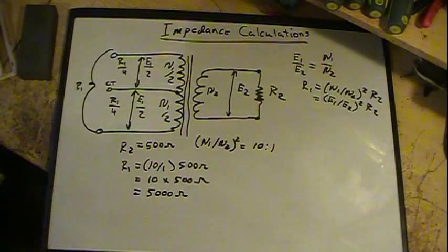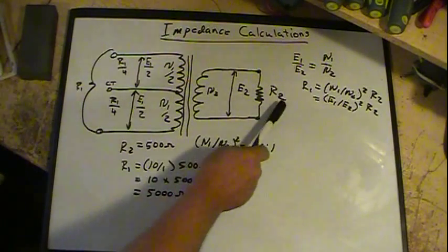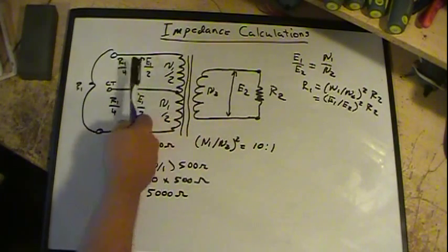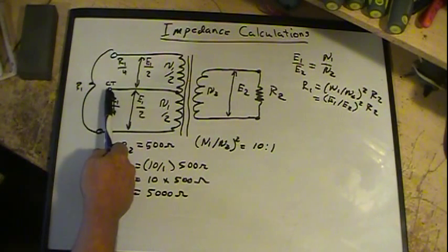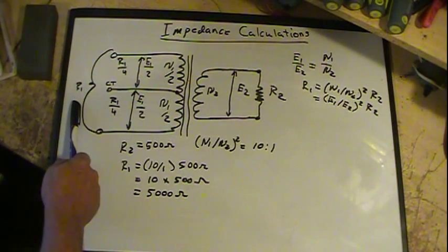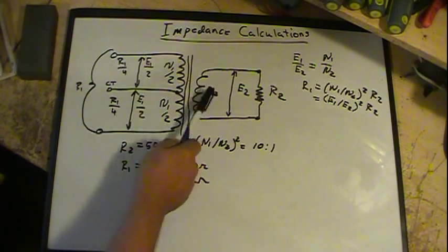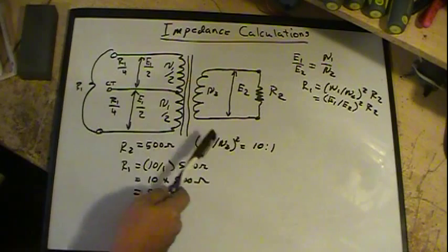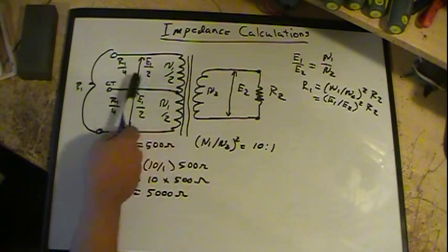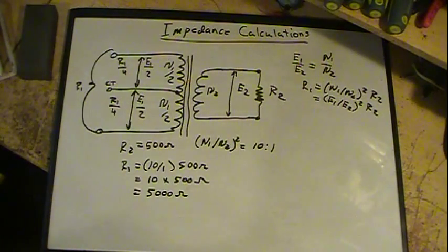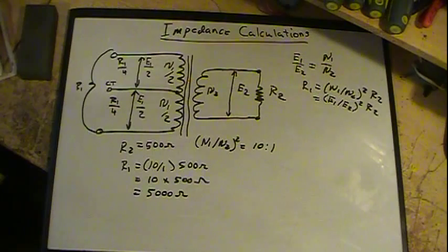So in other words, if I didn't use the center tap and I was looking at the total amount, I had a 500 ohm load here, it would reflect back to R1. And if this ratio between N1 and N2 squared came out to be 10 to 1, then the reflection back would be 5000 ohms. And that's basically what's going on with an audio transformer. Well, as far as that goes, any transformer in a radio.